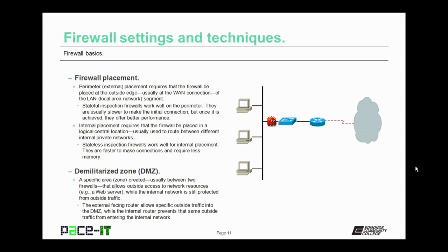You could also have internal placement of your firewall. This requires that the firewall be placed in a logical central location, and it's usually used to route between different internal private networks. Stateless inspection firewalls work well for internal placement — they are faster to make connections and require less memory.